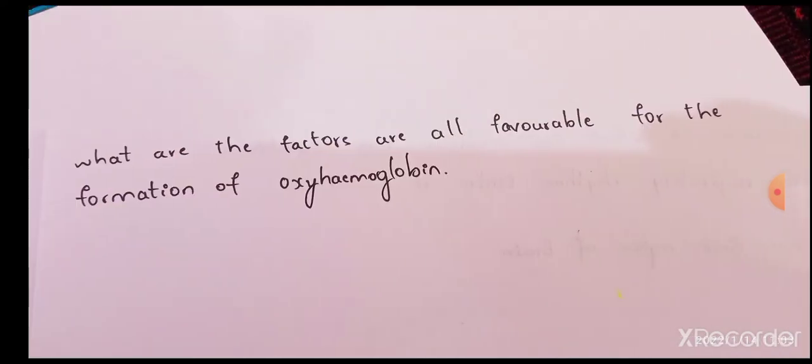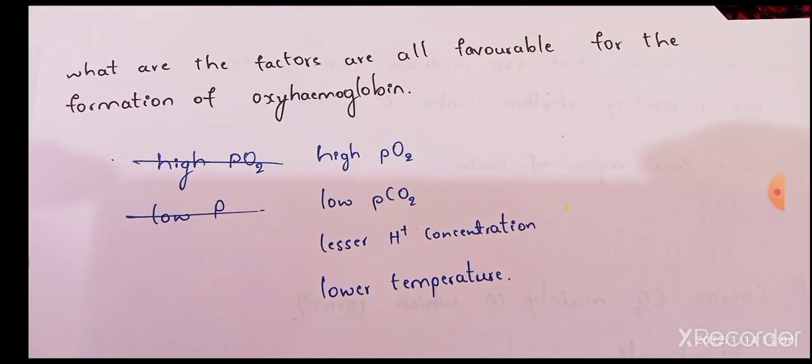The other factors available for the formation of oxyhemoglobin: high partial pressure of oxygen, low partial pressure of carbon dioxide, less hydrogen ion concentration, and lower temperature.